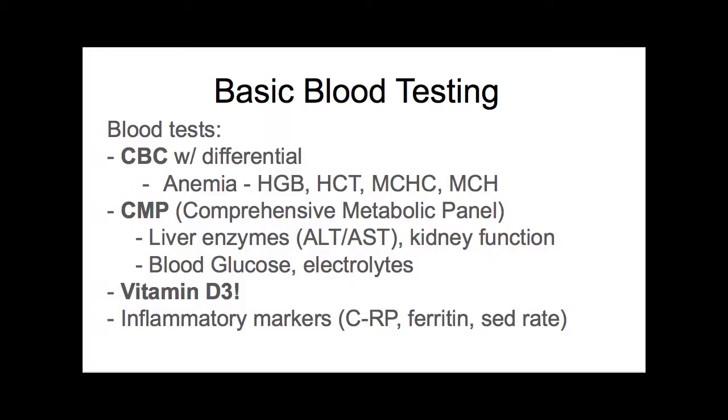When someone comes in either thinking or knowing they have autoimmunity, the first thing we want to see on everybody — regardless of their complaint — is some basic blood tests. With autoimmunity, a CBC and a CMP are relevant on everybody and both are very inexpensive — about $5 each in our office. A CBC, a complete blood count, tells us a lot about how the immune system is functioning. I want to know neutrophils and lymphocytes — high absolute neutrophils may indicate a bacterial infection, high lymphocytes a viral infection, high eosinophils an allergy or parasite. It also tells us if they're anemic, if they have enough hemoglobin and hematocrit, and if they're methylating well with their MCV.